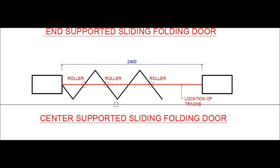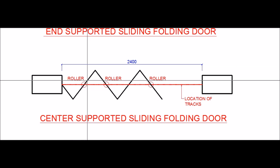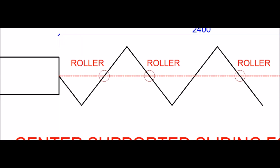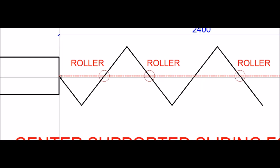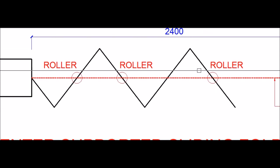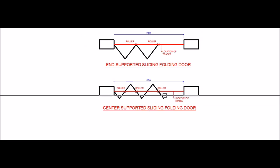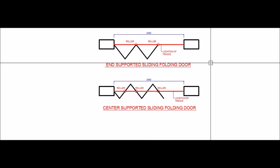In a center-supported sliding folding door, the last shutter connected to the hinge is not a full shutter but a half shutter. The shutter connected to the hinge is a half shutter, while the other shutters are full-width shutters. This is the key difference between end-supported and center-supported sliding folding doors.